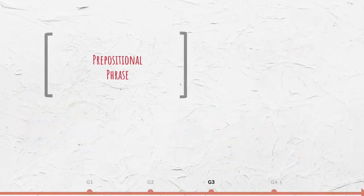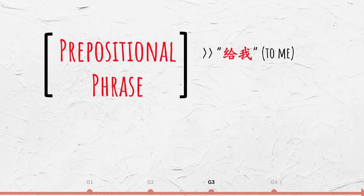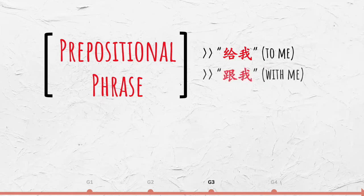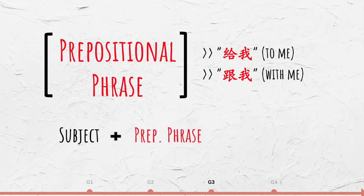Prepositional phrases such as 给我 (to me) and 跟我 (with me) are also placed before the verb. The structure is subject plus prepositional phrase plus verb phrase.